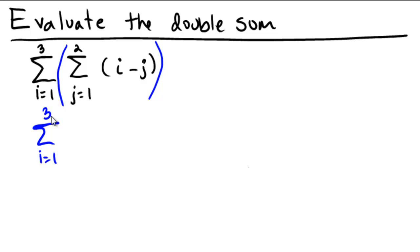But then we're going to take those indices for the j and start plugging them into the expression that's represented. So if we were to replace j with 1, we would first get i minus 1. And if we were to replace the j with 2, we would get i minus 2.